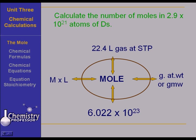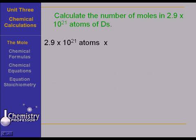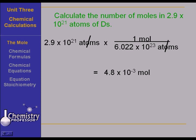It didn't matter if it was atoms of dysprosium or atoms of hydrogen or atoms of whatever. You take the 2.9 times 10 to the 21st atoms times a mole over 6.022 times 10 to the 23rd atoms, and you come up with a cancellation of atoms, leaving you with 4.8 times 10 to the negative third moles. Get the idea?